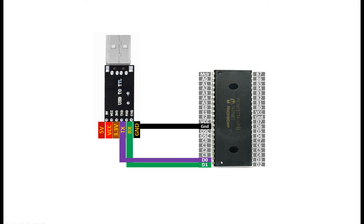These are simple connections. What will happen is we plug the device into the computer, send characters from the computer — like A, B, C — and the PIC will receive that character using its RX pin (D0). We program it so that the PIC sends it back from D1 to the RX pin of the USB-to-TTL device, and the computer will display whatever is received. The PIC simply echoes back whatever it receives.